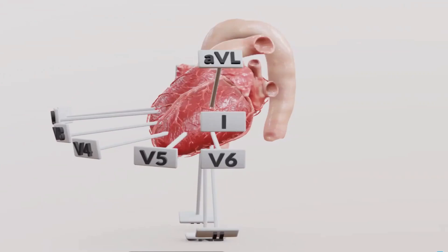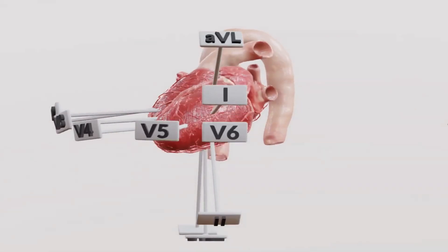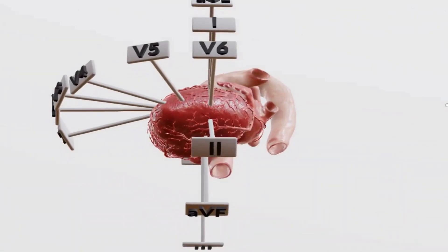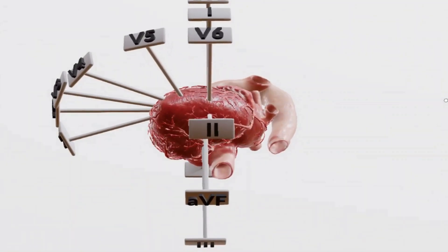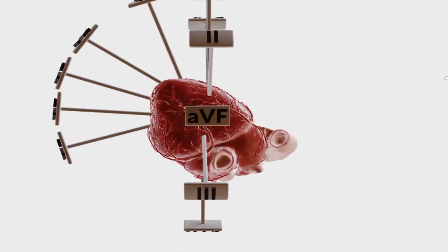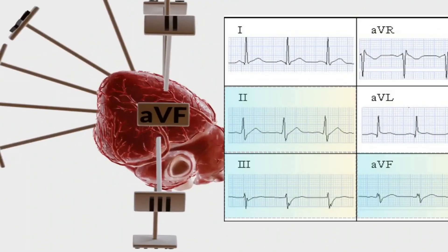Next up, the inferior wall — that's the bottom of the heart. For the inferior wall, you need to remember Lead 2, Lead 3, and AVF. These are your inferior wall leads, set up to view the bottom of the heart. Lead 2, Lead 3, and AVF all give you a direct inferior view.